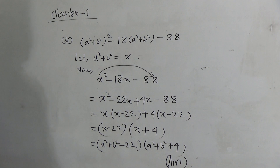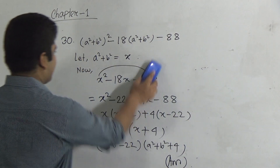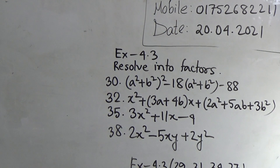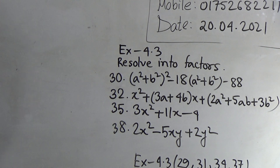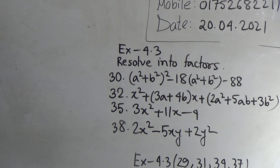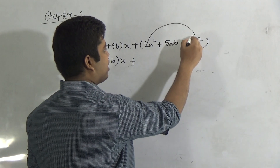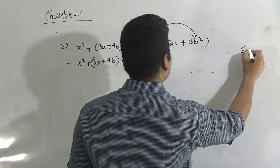Next we shall solve question number 32. The question is: x² + (3a + 4b)x + 2a² + 5ab + 3b². We use the middle term break method. First we multiply the first term by the last term: (2a²)(3b²) gives 6a²b². We need to break 5ab into two terms whose multiplication gives 6a²b².